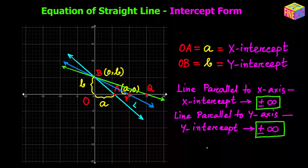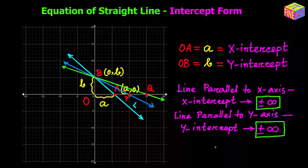Similarly, if a straight line almost becomes parallel to the y-axis, then the y-intercept will also approach infinity — whether positive or negative it doesn't really matter, but it will approach infinity. We will use this concept to show what the equation of a straight line parallel to the x-axis or parallel to the y-axis would be.